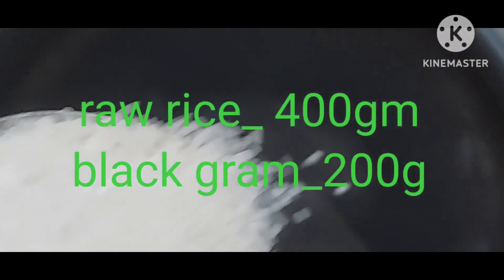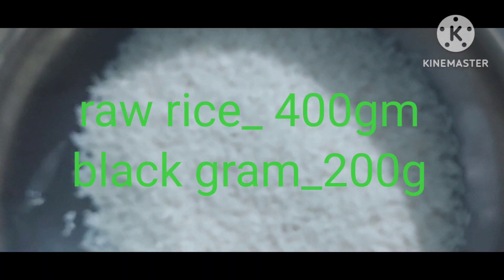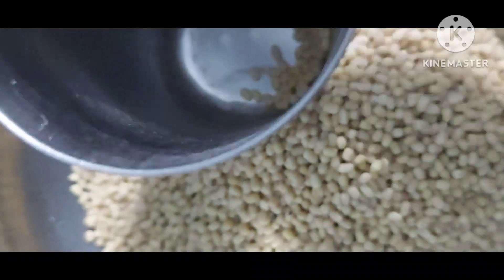Take a vessel. Add raw rice 400 grams and black gram 200 grams. Wash perfectly with pure water, then add one cup of water and close it. Rest for two hours.